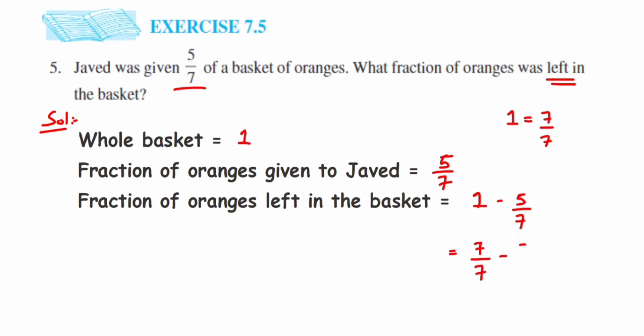Subtract the numerators: 7 minus 5 equals 2. So this equals 2/7.